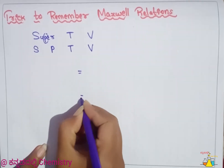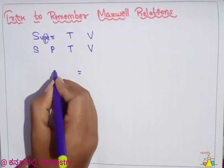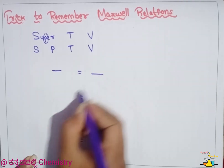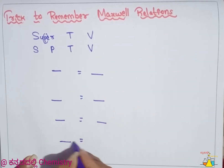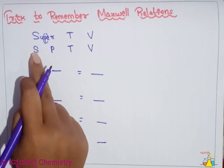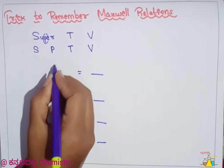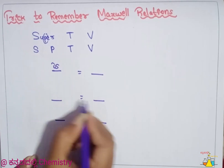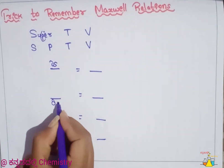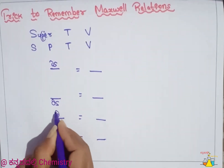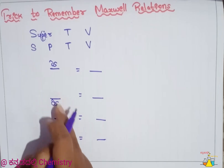So that's 4 relationships: 1, 2, 3, 4. Next, the first variable is S. So here is del S — del S 1, 2, 3, 4.